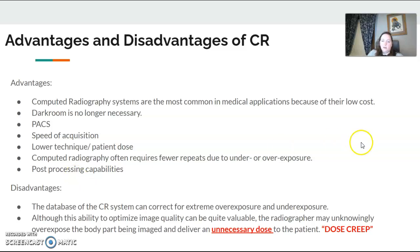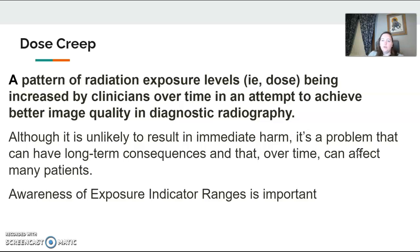One of the disadvantages possibly with digital is something we call dose creep. Dose creep is a pattern of radiation exposures that are being increased by clinicians over time just to make sure they have a quality image. Watching your exposure index numbers and knowing the ranges for your exposure index numbers for each set of equipment is important. Know where your target should be — should I be between 100 and 300? Am I using direct digital? Do I have a grid on? Things like that are really important to be aware of.